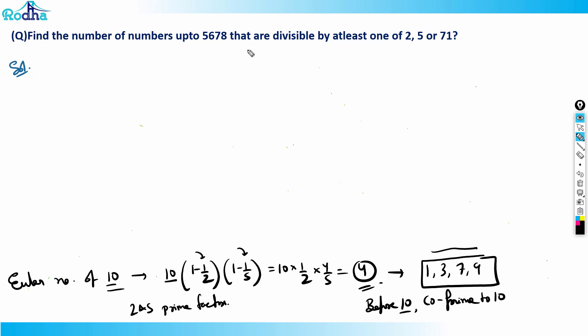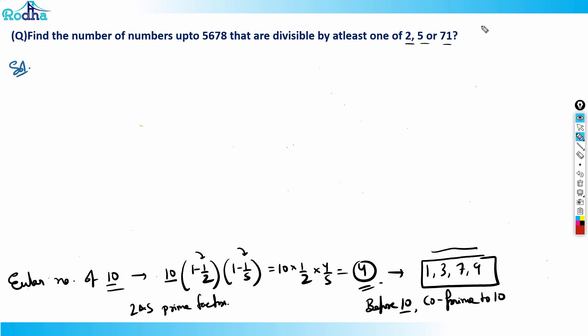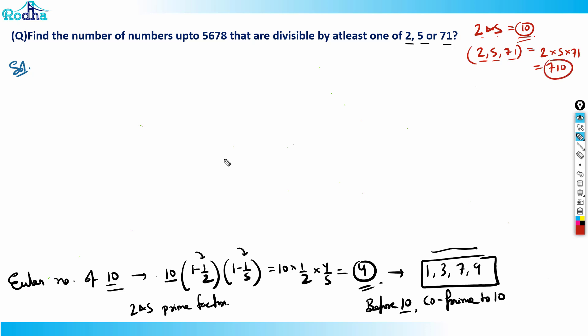Using the same logic for 2, 5, and 71: a number divisible by both 2 and 5 is divisible by 10. A number divisible by 2, 5, and 71 is divisible by their LCM. So LCM of 2, 5, and 71 is 2 × 5 × 71 = 710.